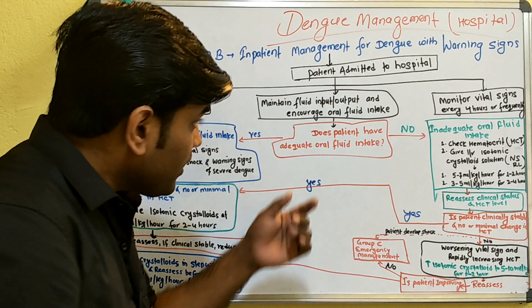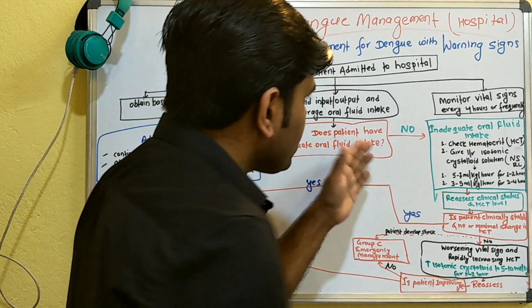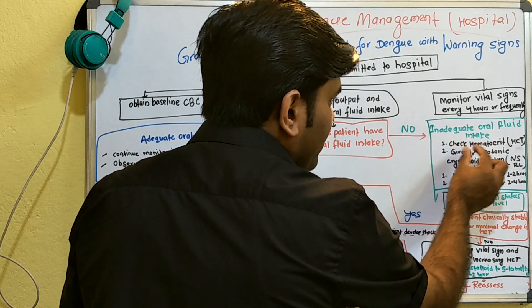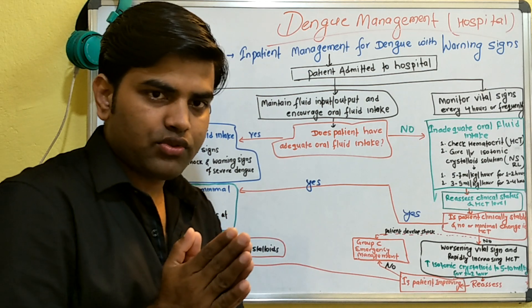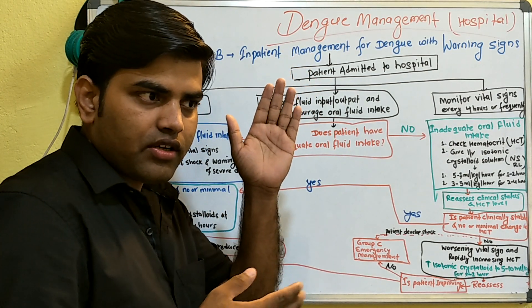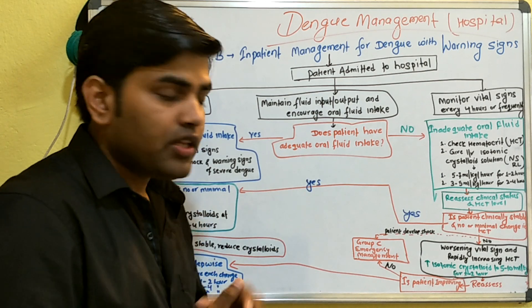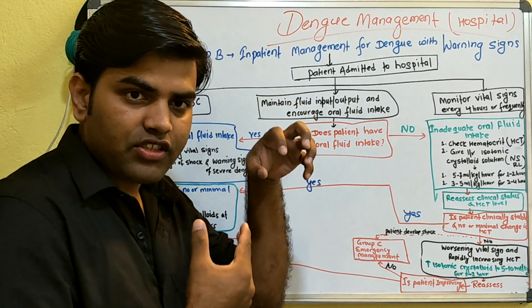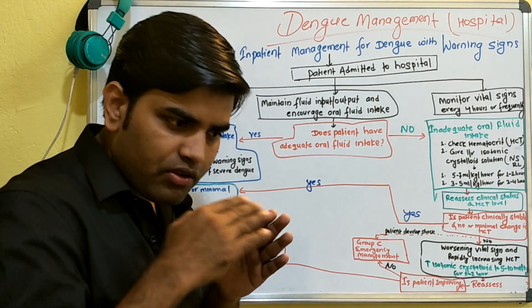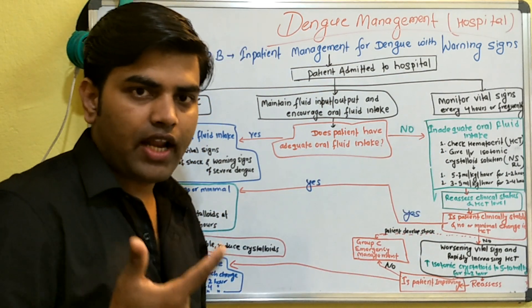If the patient is not taking adequate oral fluids, check the hematocrit level and start intravenous isotonic crystalloid solution — that is, normal saline or Ringer's lactate. You must give only isotonic solution — not hypotonic and not hypertonic. Hypotonic solution causes intracellular fluid shifts and fluid leakage, so always use isotonic: normal saline or Ringer's lactate.